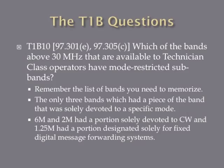Which of the bands above 30 MHz available to technician class operators have mode-restrictive subbands? Think back to the list of bands you had to memorize. Only three bands had a piece solely devoted to a specific mode: 6 meters and 2 meters both had portions solely devoted to Morse code or CW, and 1.25 meters had a portion designated for digital message forwarding systems. When a question asks for a band above a certain frequency, it refers to a band with a shorter wavelength. So 6 meters, 2 meters, and 1.25 meters all have shorter wavelengths than 30 MHz — they are above 30 MHz.